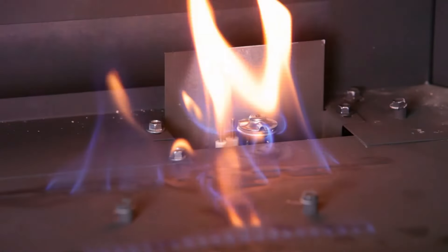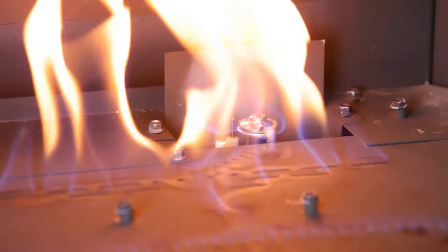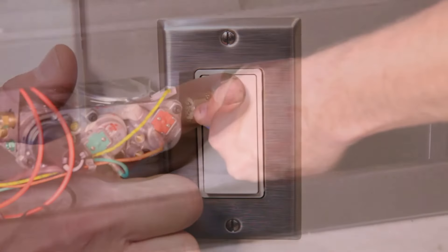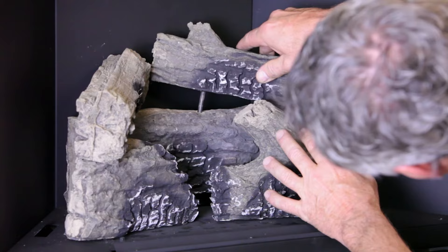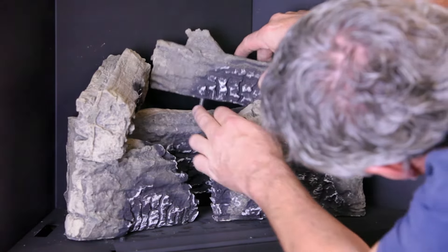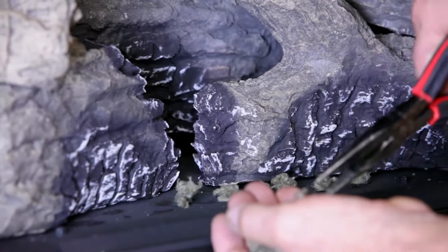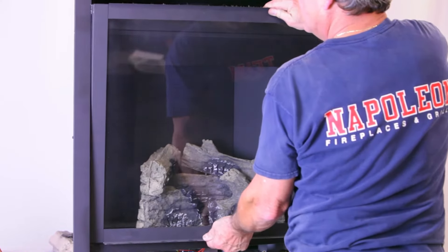Turn off electricity and gas. Replace log set or glass media. Close or replace main viewing door and replace trims.